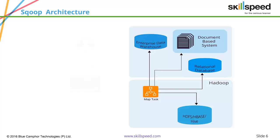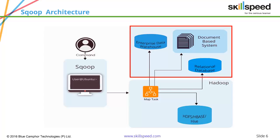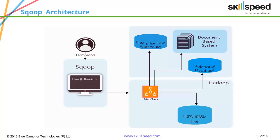Here you can see the Scoop architecture. You will typically be working with Scoop from a Scoop client installed on your Linux machine — in this picture, an Ubuntu box with the Scoop client installed. One very important point is that you must have Java installed on the machine where Scoop is running, because the entire Scoop tool is written in Java, making Java support mandatory. Scoop connects to the RDBMS, generates the metadata, and based on that, map tasks are generated which can copy data to an enterprise data warehousing system, Hive, HDFS, HBase, etc.